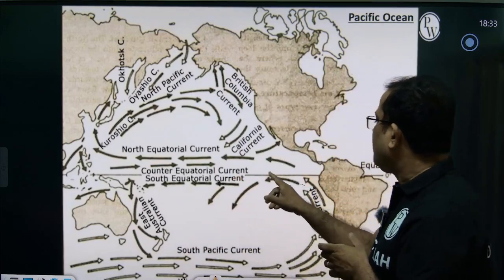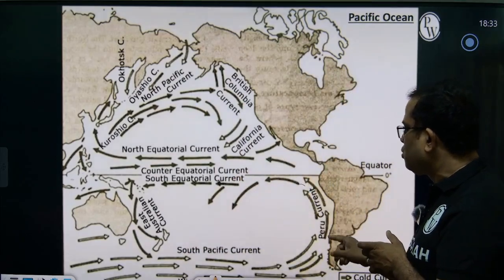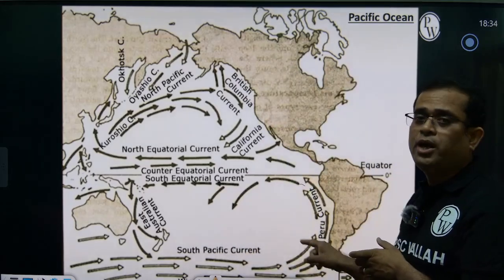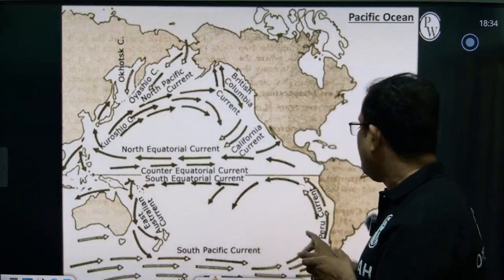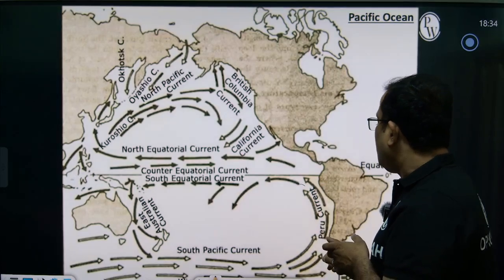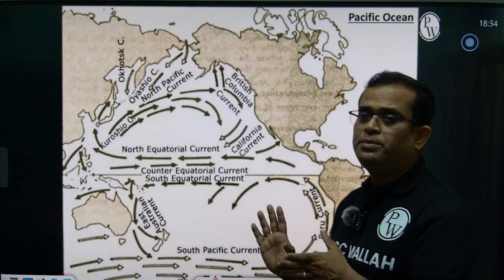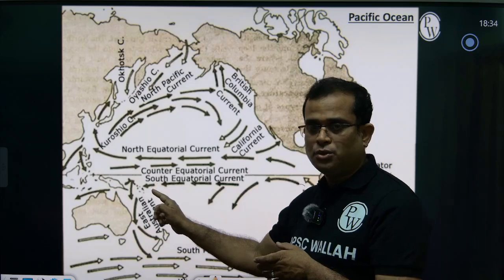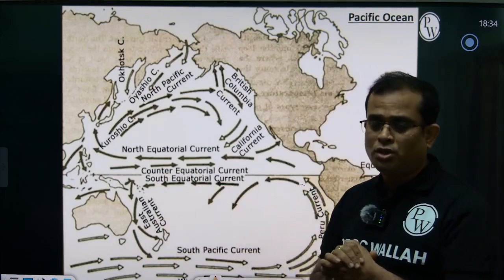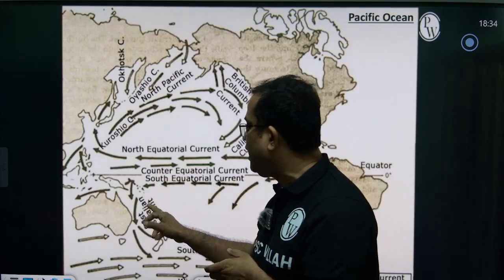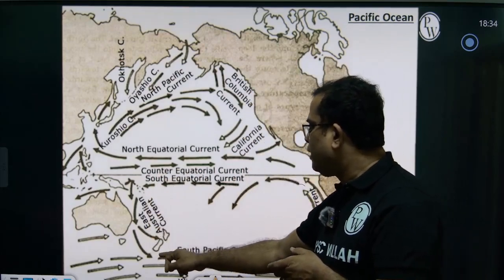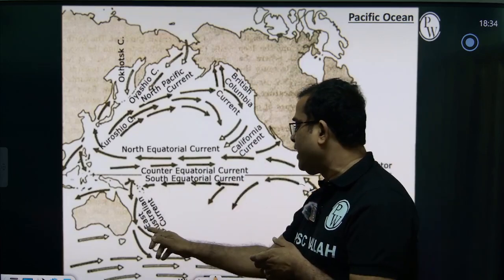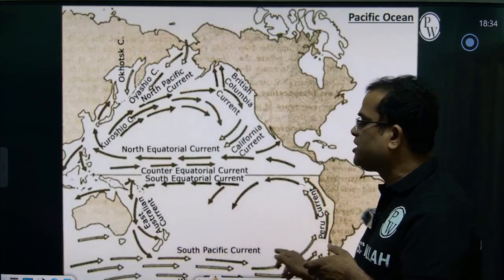Coming to the South Pacific Ocean, along the western coast of South America, we have the Peru Current, also known as the Humboldt Current. This is a cold current with a northward movement. It merges with the South Equatorial Current, then comes to the eastern coast of Australia, making a loop through the southern part near Antarctica, forming the Southern Pacific Current.